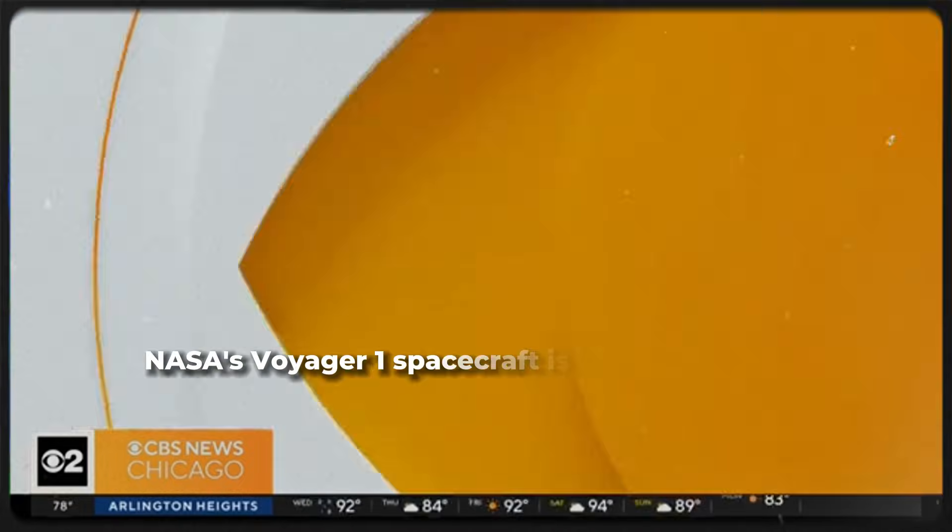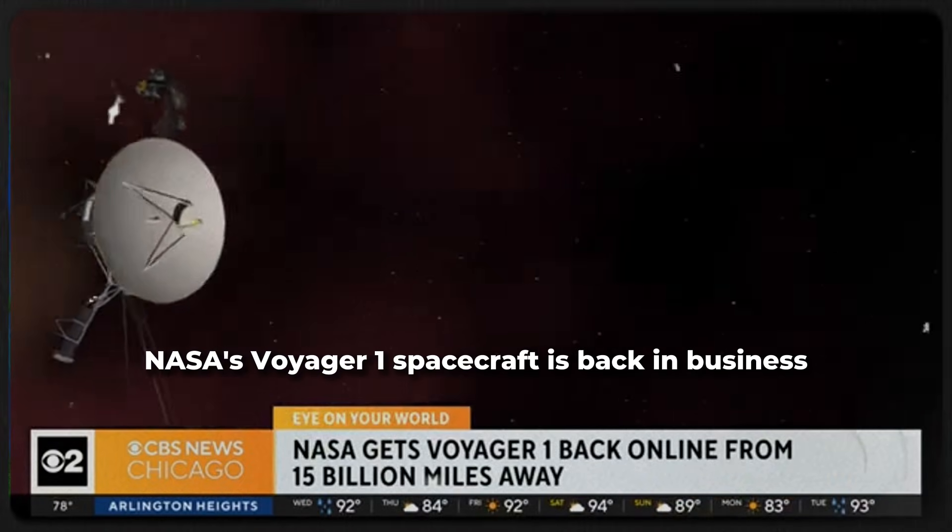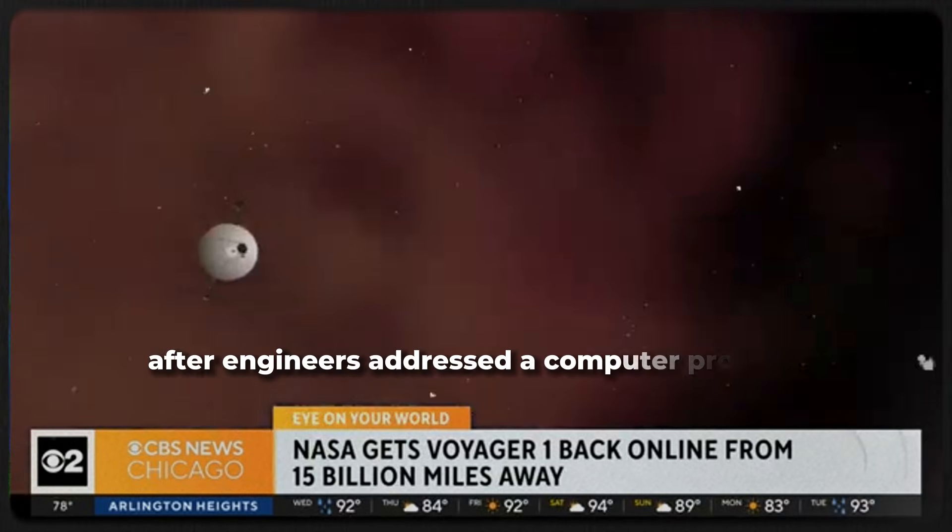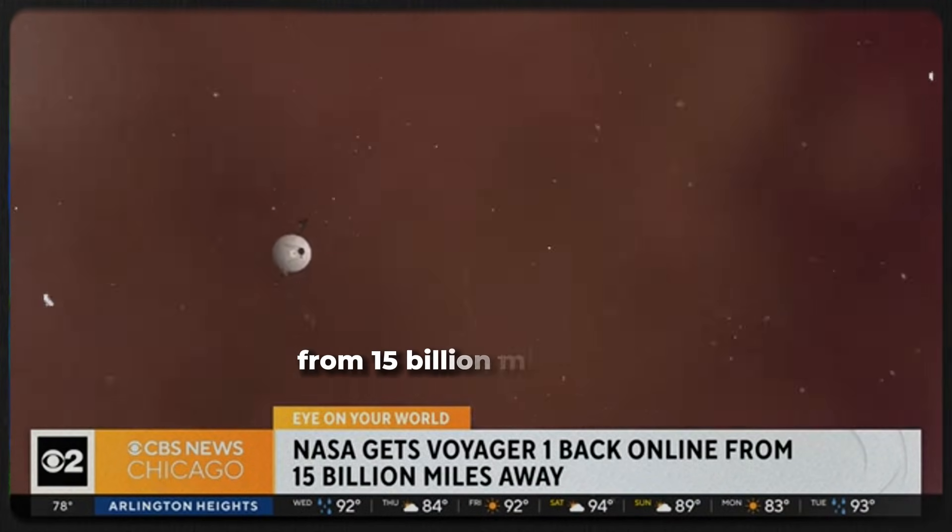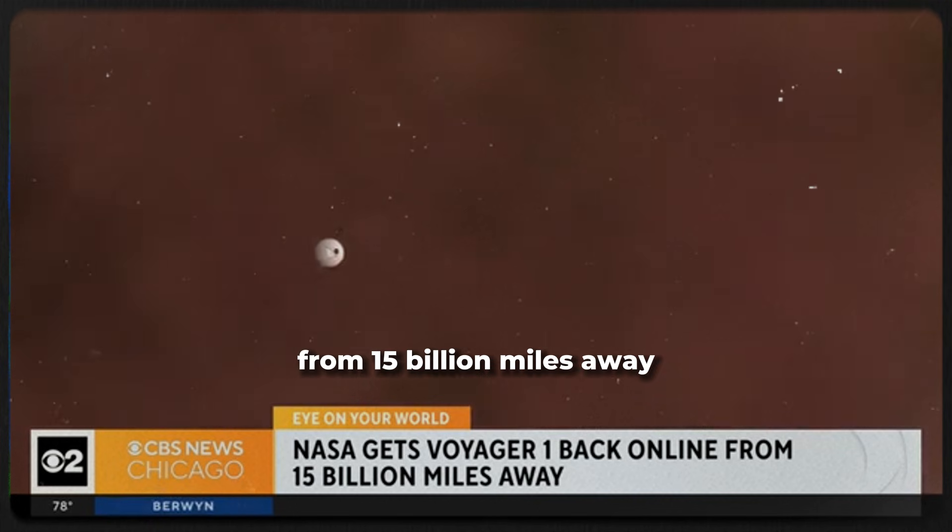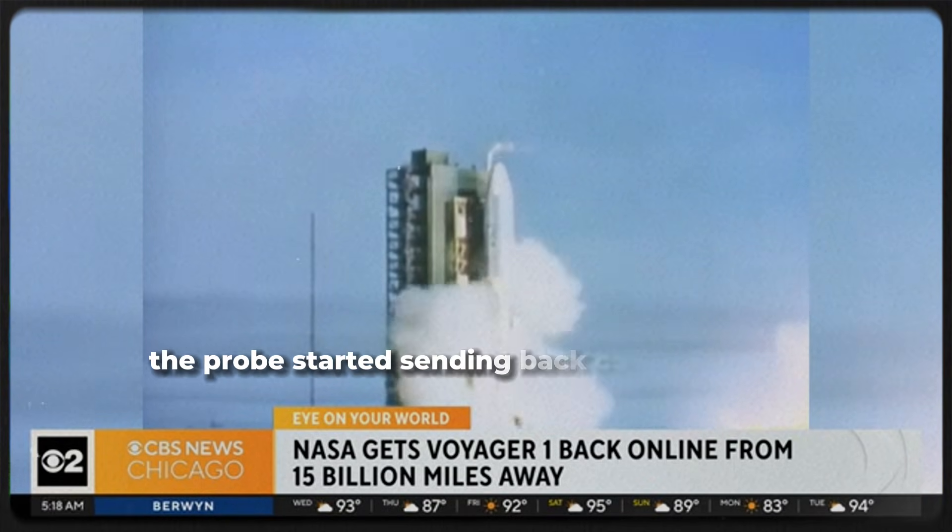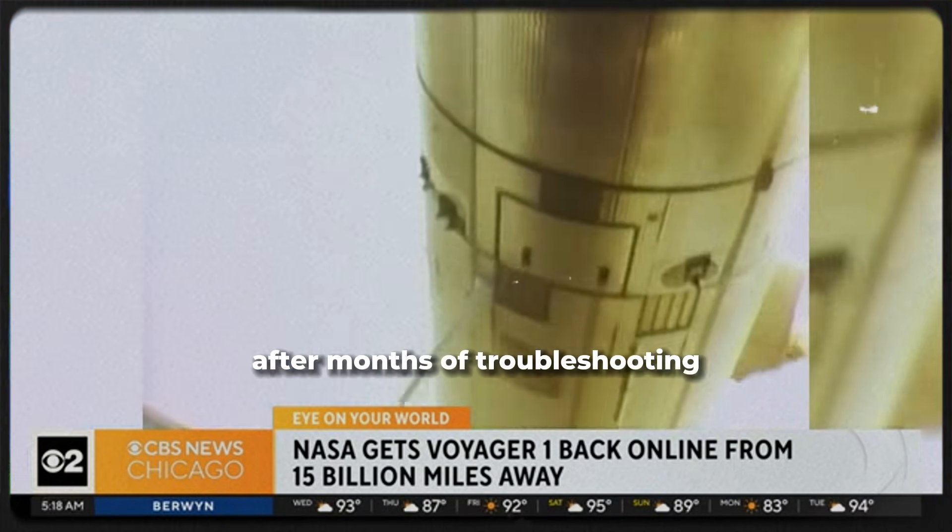Watch Tuesday, Dan Billow tells us what Voyager carries to communicate with other civilizations. NASA's Voyager 1 spacecraft is back in business after engineers addressed a computer problem from 15 billion miles away. Back in November, the probe started sending back corrupted data. After months of troubleshooting, scientists tracked the problem to a specific computer chip.